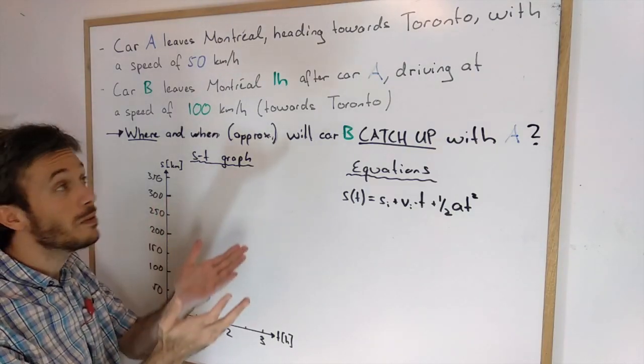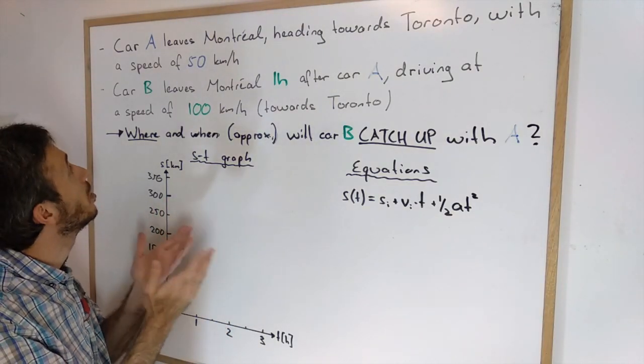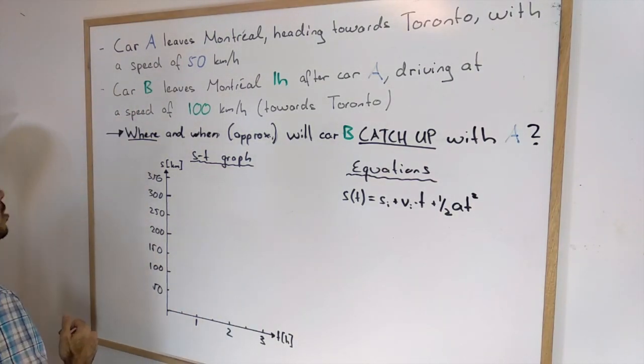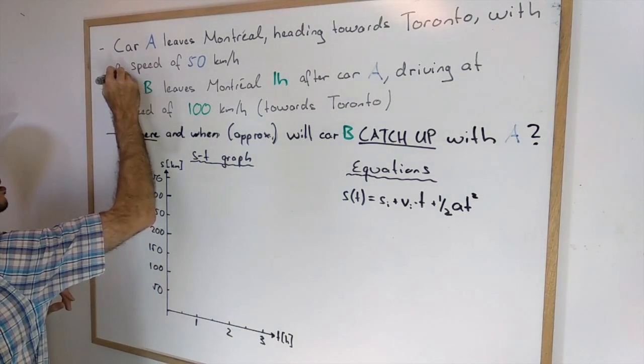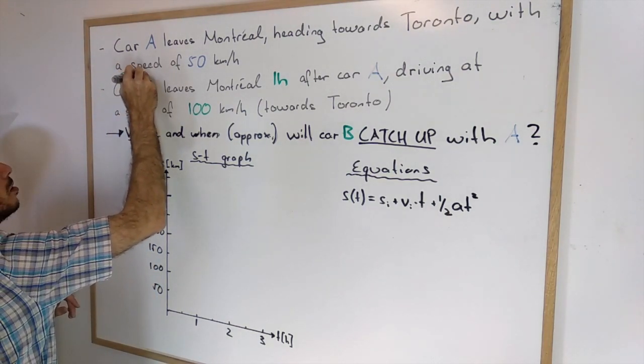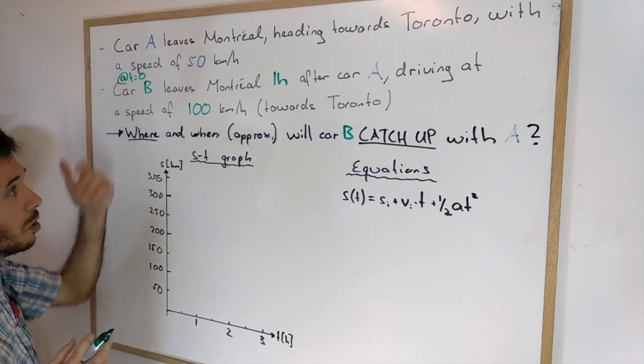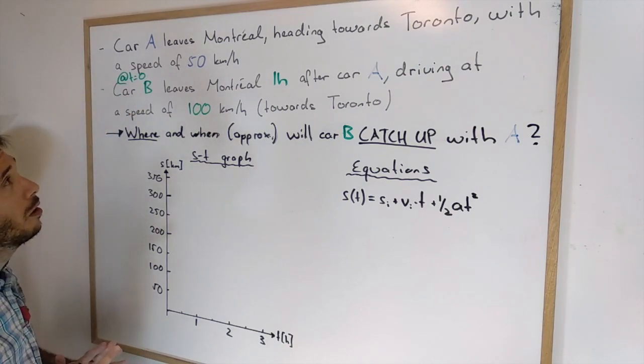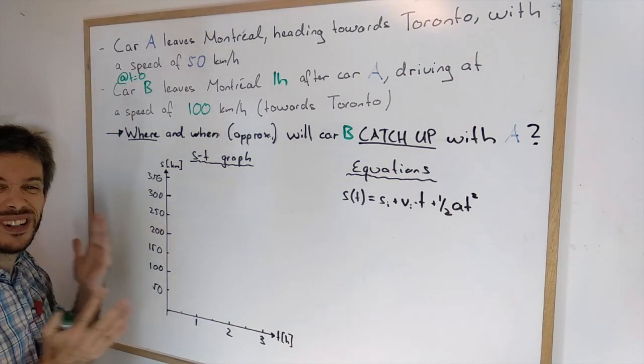Now once we established when time is zero, for us time is zero when car B leaves Montreal. So let's add this here, at time equals zero, B leaves Montreal. And then we have to look, okay, when B leaves Montreal, at this moment, where is A?